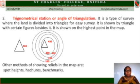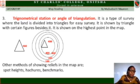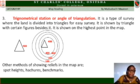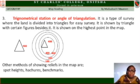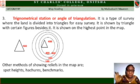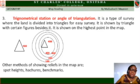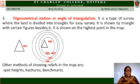Trigonometric Station, or Angle of Triangulation. This is a type of survey where the land is divided into triangles for easy solving. It is shown by a triangle symbol with certain figures beside it, placed on the highest point on the map. For example, a triangle with the figure 330 indicates that particular spot has been precisely measured. The highest point on the map from the contour lines is 400. We call these trigonometrical stations where angles of triangulation are measured.